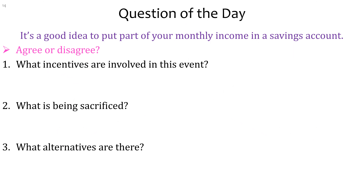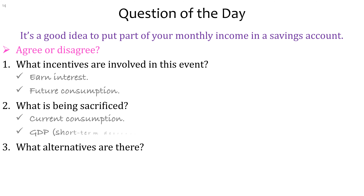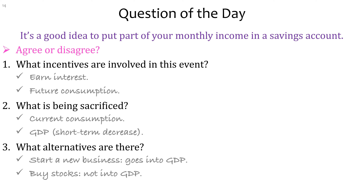Let's revisit our question of the day: it's a good idea to put part of your money in a savings account. Write at least two points for each of the three questions — incentives, sacrifice, and alternatives. A sample student answer: an incentive is to earn interest or have future consumption; a sacrifice is current consumption and lower GDP in the short run; some alternatives are starting a new business as a firm so money goes into production, or buying stocks of a firm — also a form of saving but not a savings account. Have a wonderful day.